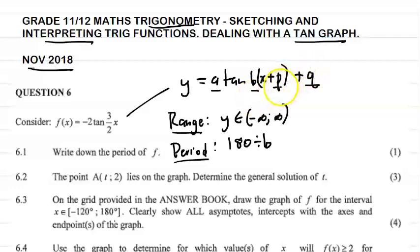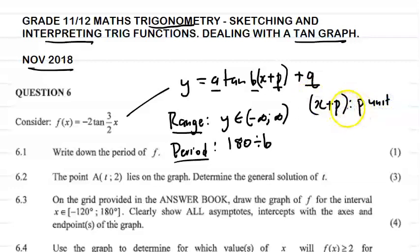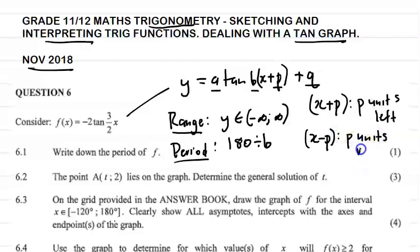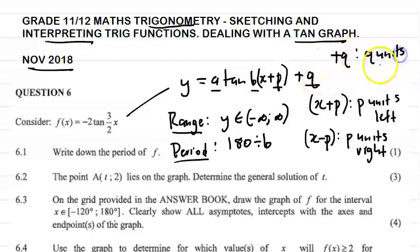The effect of p on the graph is the horizontal shift. If you have x plus p, the graph is going to shift p units to the left. So if I had x plus 60, that'll be 60 units to the left. x minus p will be p units to the right. This is true for all functions, not only the tan graph. Plus q means q units up, and minus q is q units down.